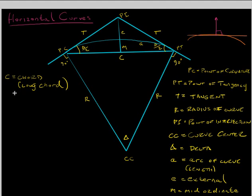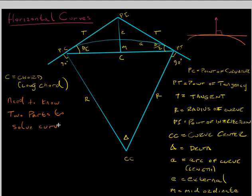To know everything about a curve and solve for every part, you need to know at least two parts. Usually a plan will give you two parts of the curve so you can solve for everything else — typically the radius and the delta. Sometimes it will give you three parts just to make sure nothing on the plan is wrong.